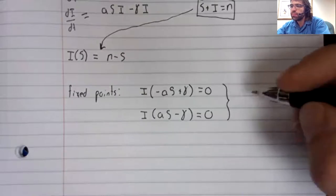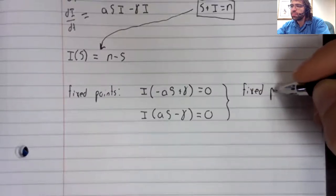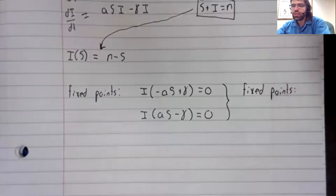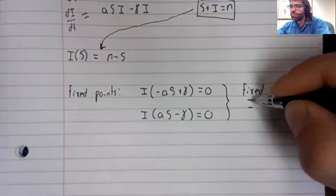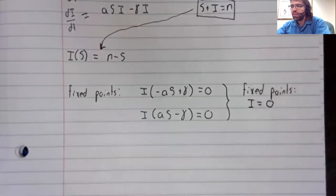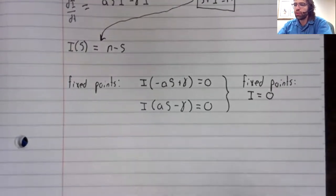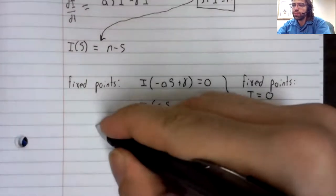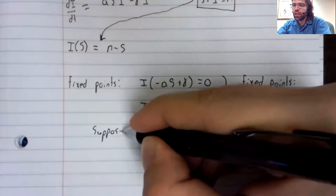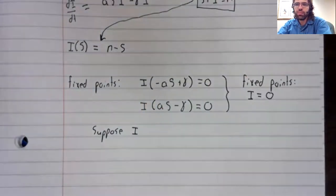So this gives us some fixed points. Fixed points occur when I equals zero.